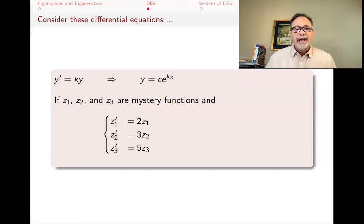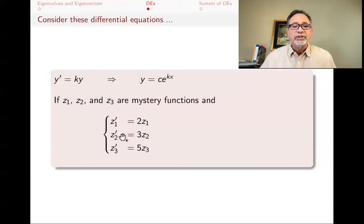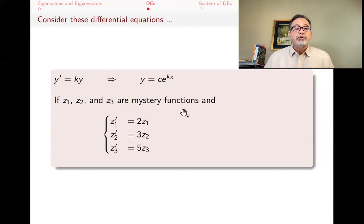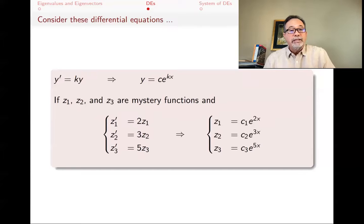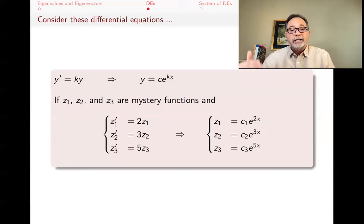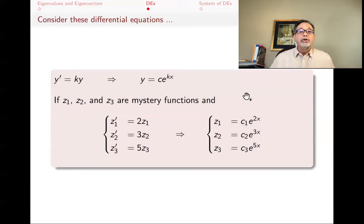What if instead of one equation we have a system? With three mystery functions where Z1 prime is 2Z1, Z2 prime is 3Z2, and Z3 prime is 5Z3, the solution is no harder — each is solved separately. Z1 is a constant times e to the 2x, Z2 is e to the 3x, and Z3 is e to the 5x, with different constants out front. Their exponents differ, but this was no harder to solve.